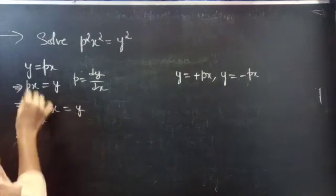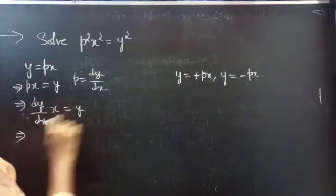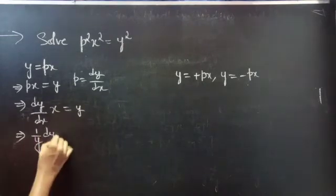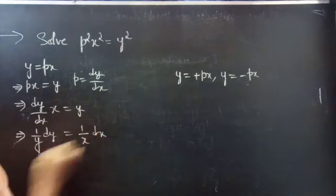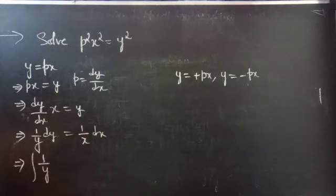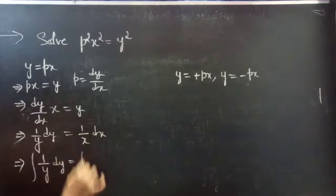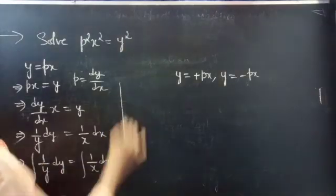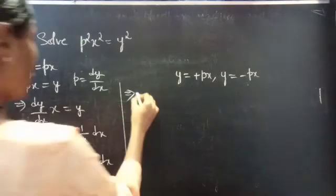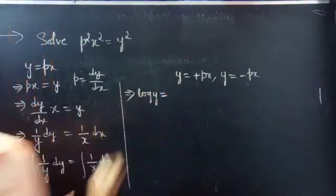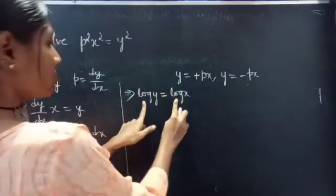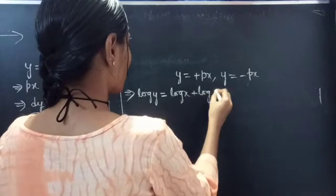Now, get y to the LHS and x and dx to the RHS. So you can write it as 1/y dy equals to 1/x dx. Here the variables are separable, so we can integrate both sides: integral of 1/y dy equals integral of 1/x dx. Since we have both terms in log, we consider the integral constant as log c.